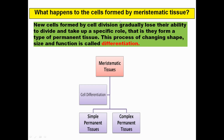The first thing to note is that meristematic tissues divide repeatedly and form newer and newer cells. What is the fate of these newly formed cells? These newly formed cells undergo the process of cell differentiation and are ultimately converted into permanent tissue, either simple or complex. Meristematic tissues have the ability to divide repeatedly, but permanent tissue does not have such capacity.